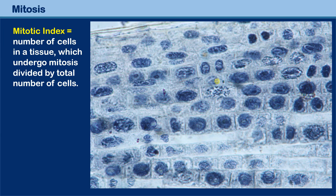Here we have not an animal tissue but a plant tissue — these are the roots of an onion. You can see different cells with nuclei. Many are dividing: this one is in prophase, this one is in prophase — a lot of prophase cells. This one is in telophase — you can see the new cell plate being formed here.